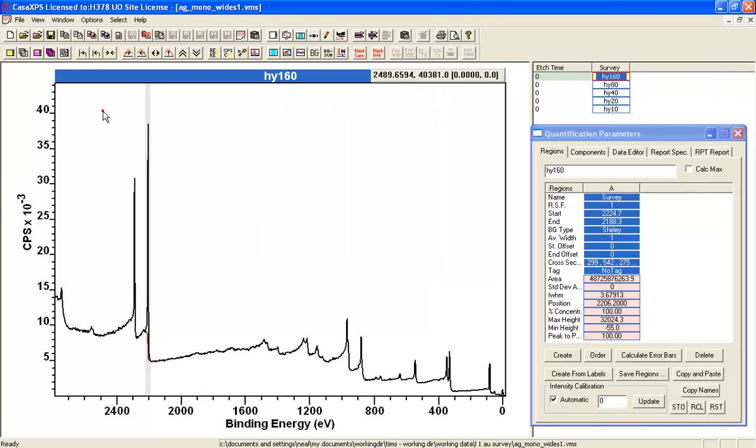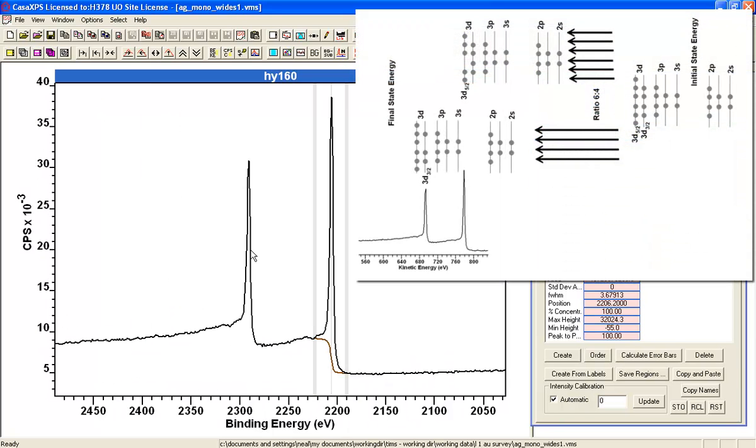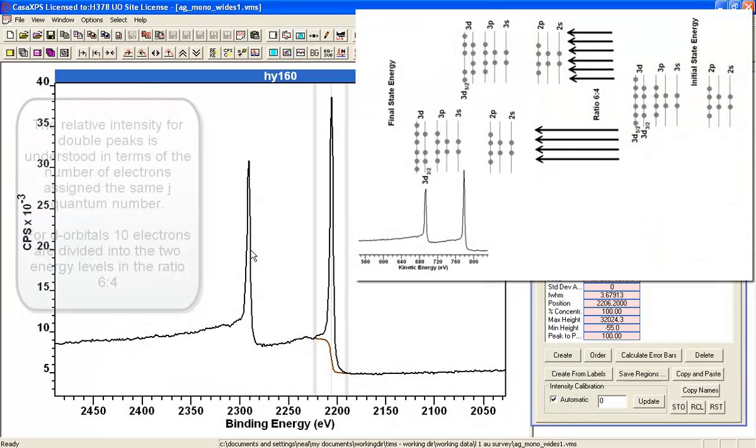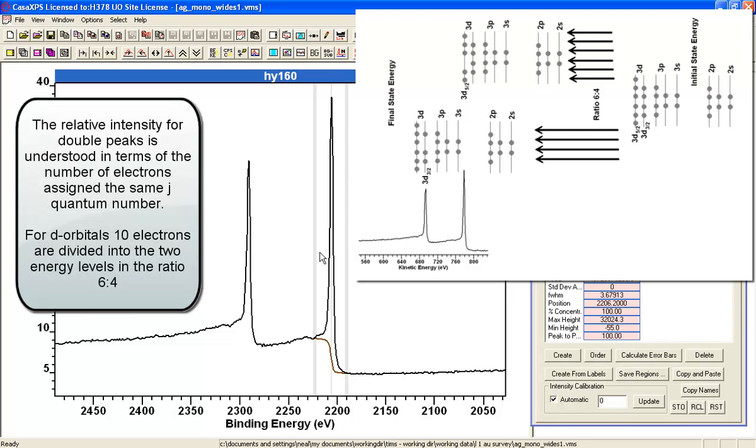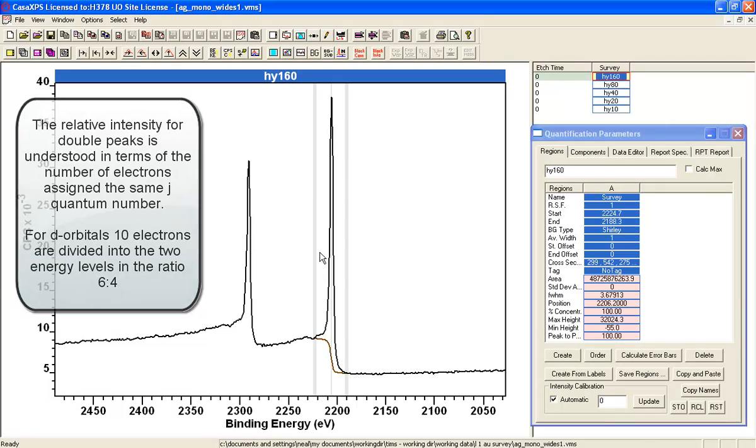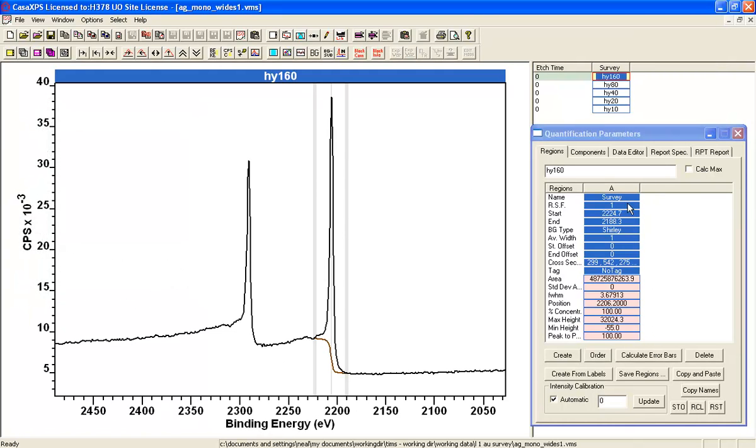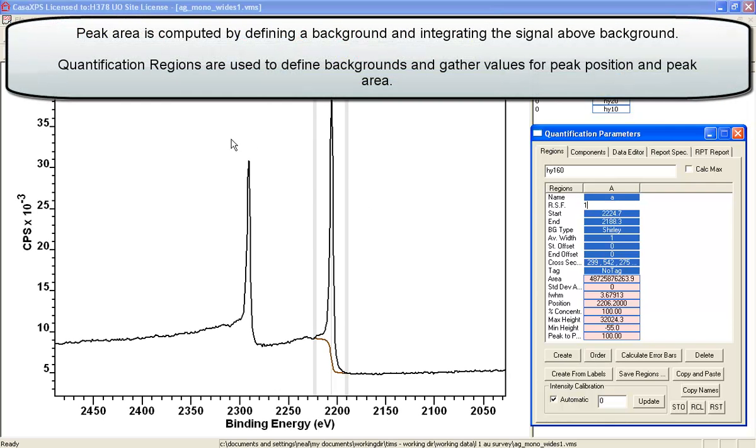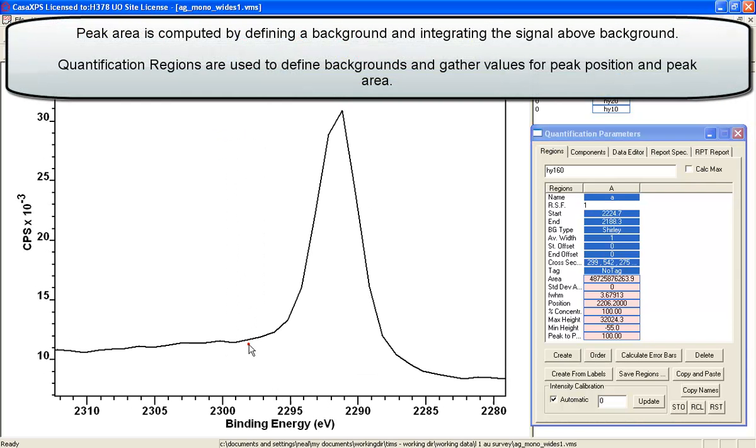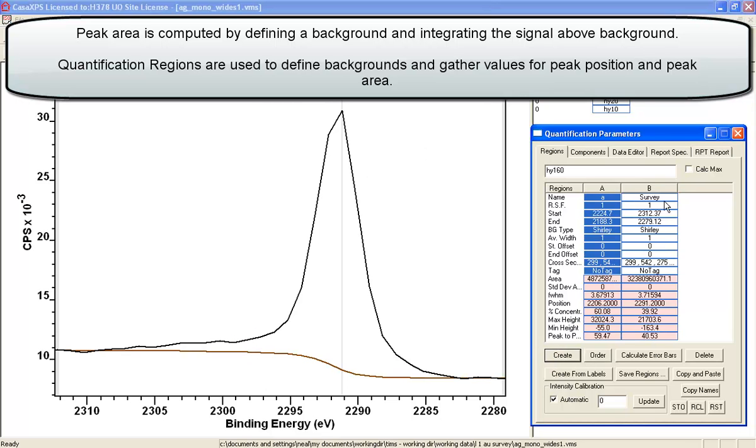So let us illustrate this point by looking at a pair of peaks for which it is clear the relationship between them in terms of the photoemission process. So I have already created here a peak that I will call A, and I am now going to create a second region which I am going to call B.